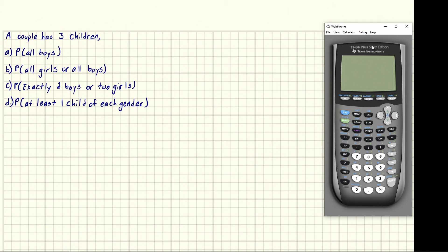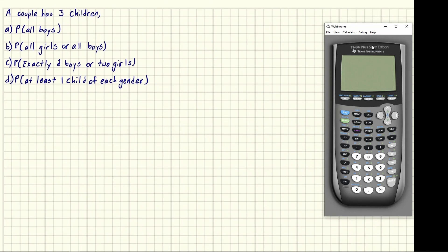With only three kids it's pretty easy to make a map of all the possible outcomes, and that map is going to be very helpful. Starting at the beginning where they have not had any kids yet, we're going to split into two possible outcomes: the first kid is a boy or the first kid is a girl.